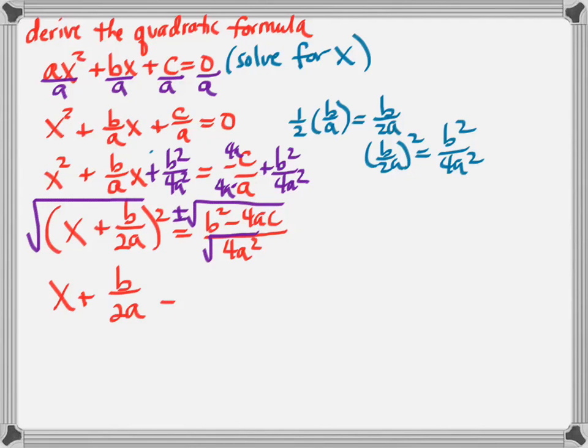So simplifying that, I get x+b/2a. And then on the right-hand side, the top doesn't simplify at all. It's still ±√(b²-4ac). But the denominator's a perfect square, so it's just 2a.